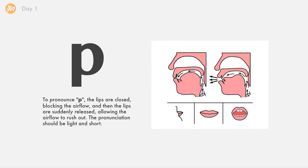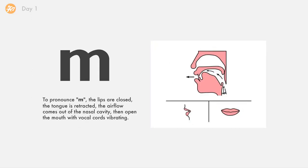The next one is b. To pronounce b, the lips are closed, blocking the airflow, and then the lips are suddenly released, allowing the airflow to rush out. The pronunciation should also be light and short.